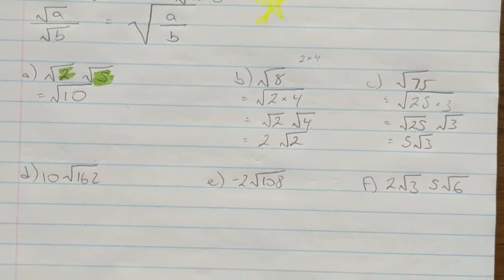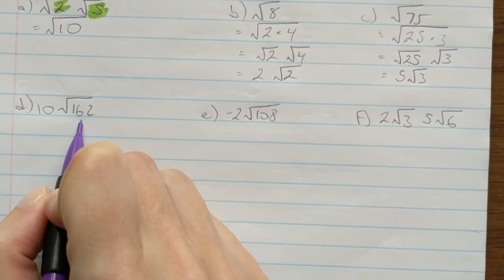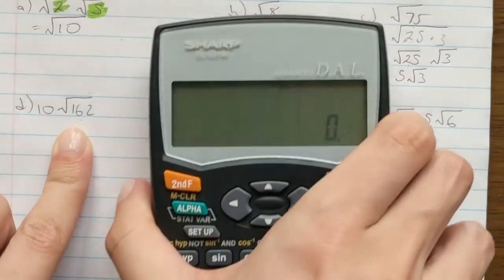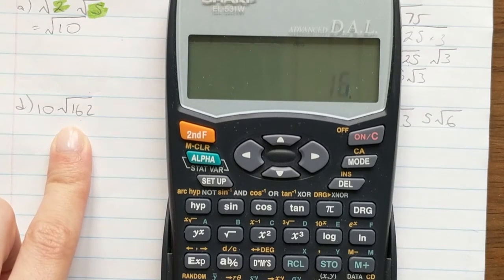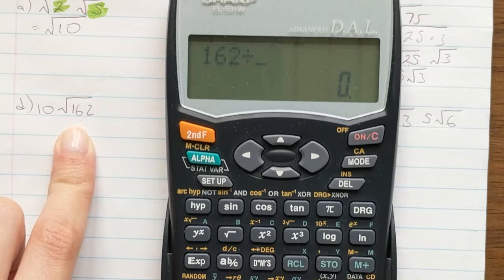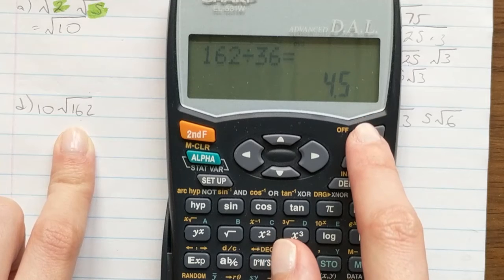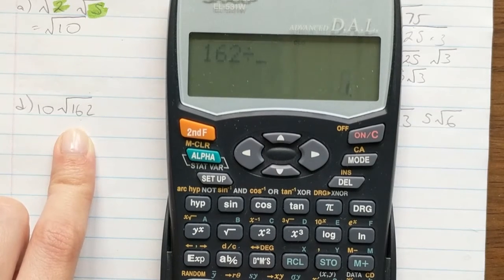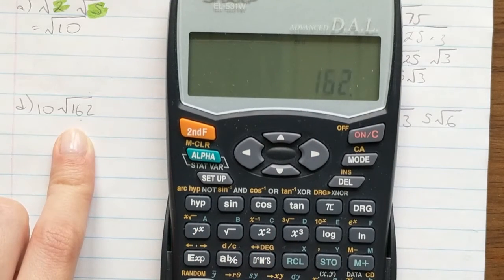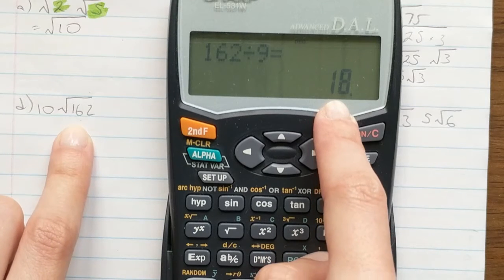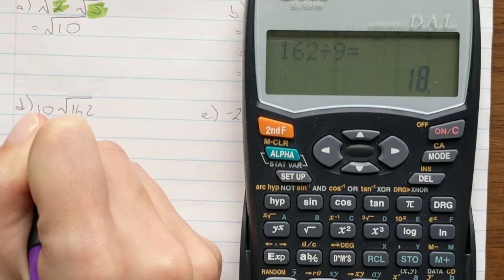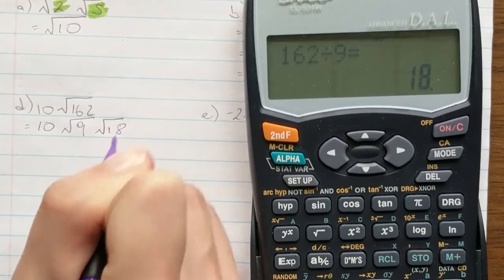Now let's look at some more challenging questions. Consider 10 × √162. When faced with a large number and we don't know the factors off the top of our head, we pull out a calculator and start dividing. Trying 36 gives a decimal, 64 gives a decimal, 16 gives a decimal, but 162 ÷ 9 = 18. So we can write this as 10 × √9 × √18.